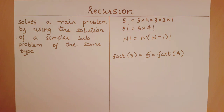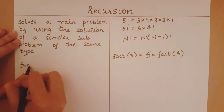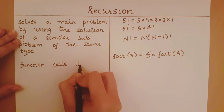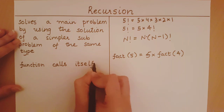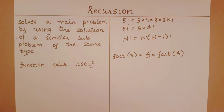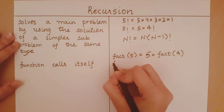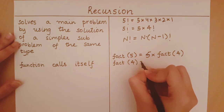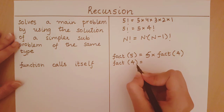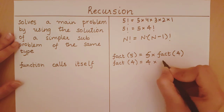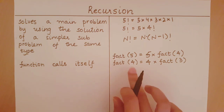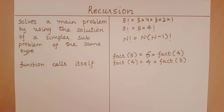So what is another important point of recursion? The function calls itself. So now when we need to find factorial of 4, the function will run again, this time for 4, and it will say factorial of 4 — as you might have guessed by now — is 4 into factorial of 3. Once again, within the function itself, the function is going to call itself.